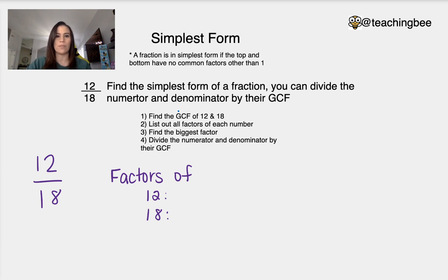So what is simplest form? Simplest form is a fraction that is in simplest form if the top and the bottom have no common factors other than one. So a lot of times we'll come with an answer that becomes a fraction and we are able to reduce it or in other terms simplify it to the simplest form.